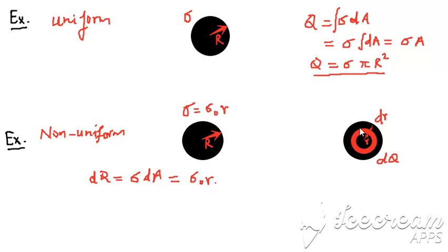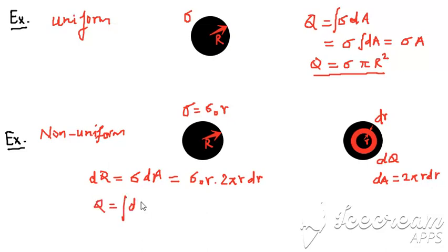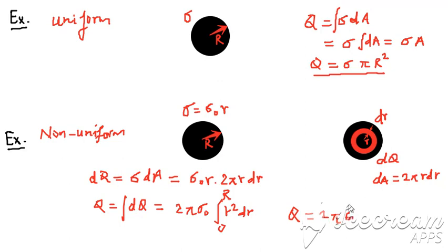For dA in this radially symmetrical case, dA = 2πr dr. Substituting, dQ = σ₀ r × 2πr dr. To get the total charge Q, we integrate this expression, bringing 2π σ₀ outside the integral, leaving ∫r² dr from 0 to R. This gives the final answer: Q = 2π σ₀ R³ / 3. Using this integration, we can find the total charge on a non-uniform disk.